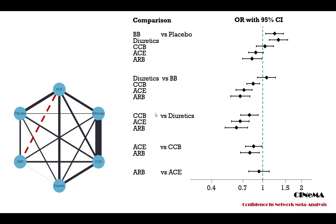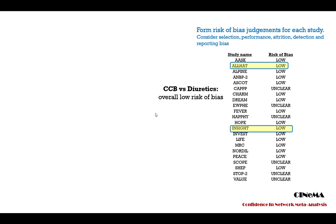This forest plot presents the odds ratios for all treatment comparisons for the incidence of diabetes. We want to form judgments about study limitations in the evidence that produced those estimates. Risk of bias assessment has been completed at the study level. Studies have been evaluated with respect to allocation concealment, blinding, missing outcome data, and other risk of bias components. Each study has been classified into one of three possible groups: overall low, unclear, or high risk of bias.